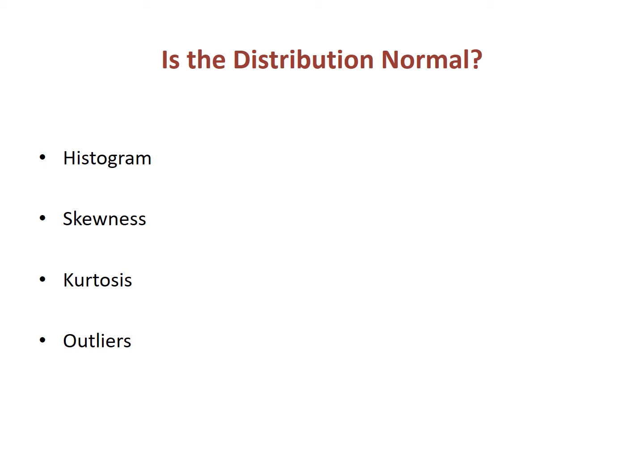Many of the earliest statistics were developed to study natural phenomena, which often conform to recognizable patterns and have only random deviations from the central tendency. Social behavior is very different, and we are continually concerned about whether our data conform to the assumption of normality. There are four easy ways to check for normality: using histograms, statistics for skewness and kurtosis, and data on outliers.